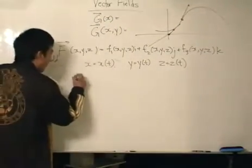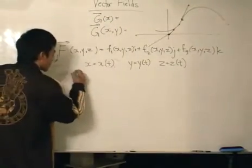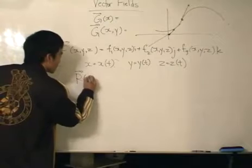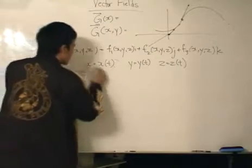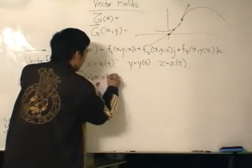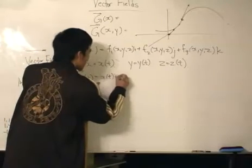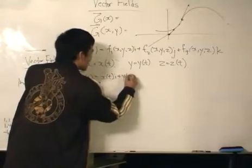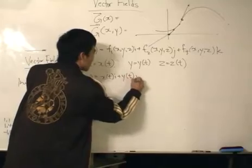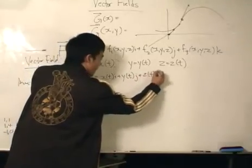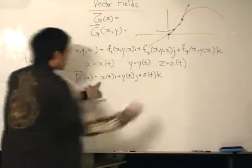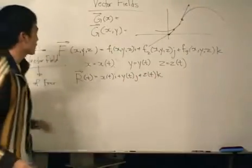So let's say our position vector r in terms of parameter t equals the i component, y(t) as the j component, and x(t) as the k component here — the position vector.